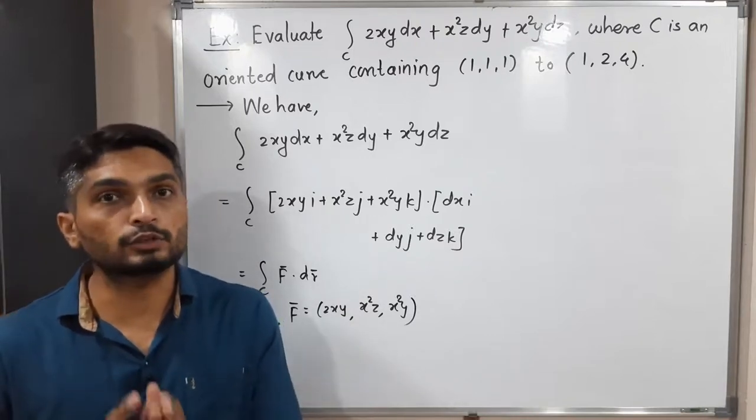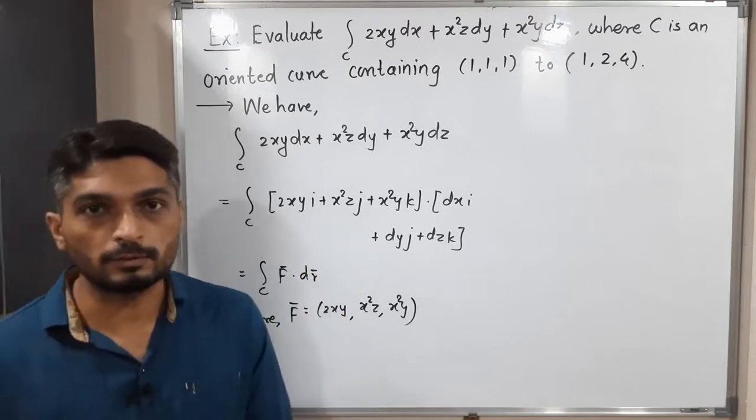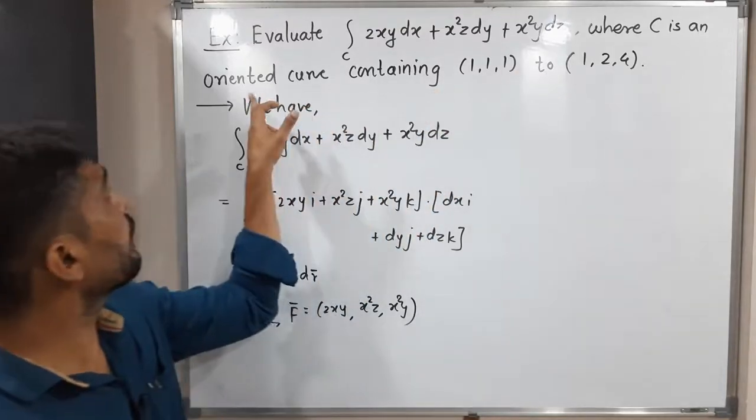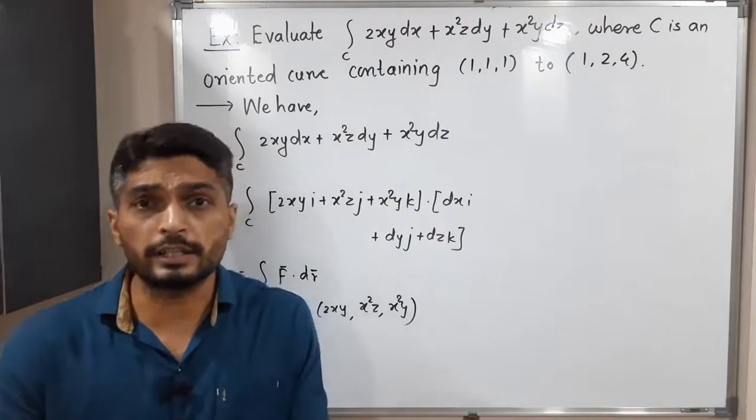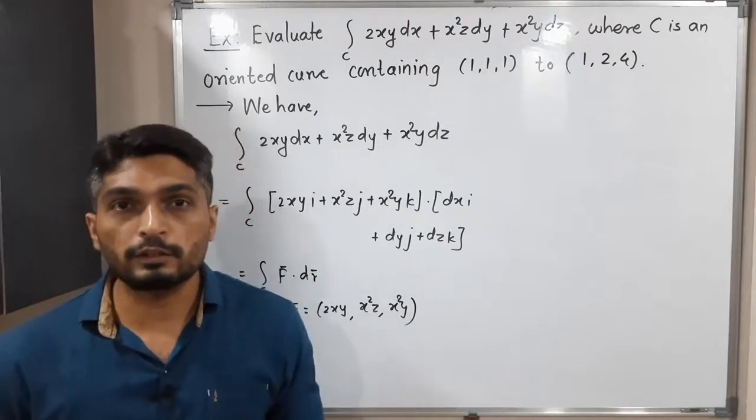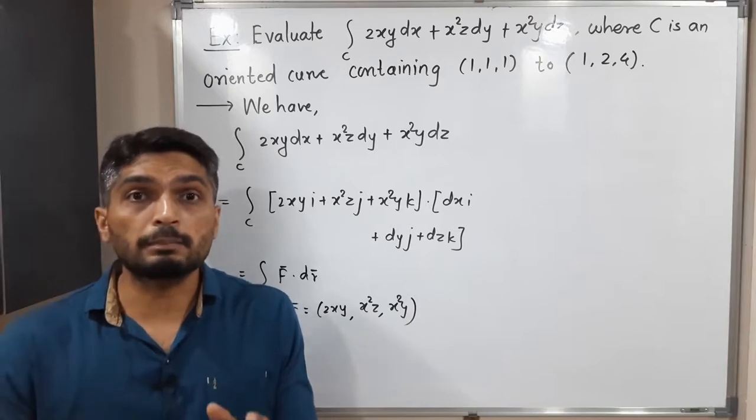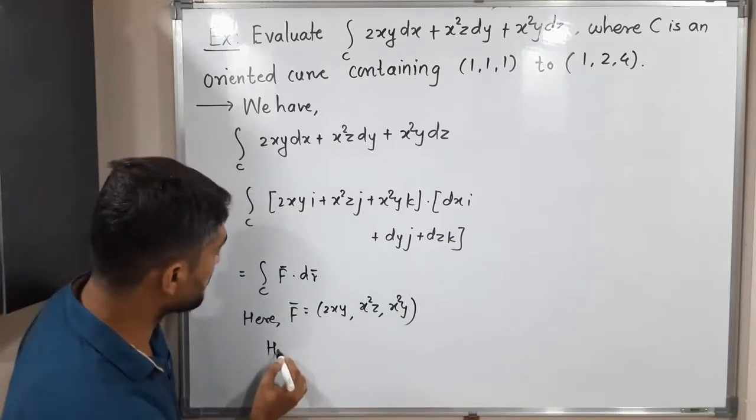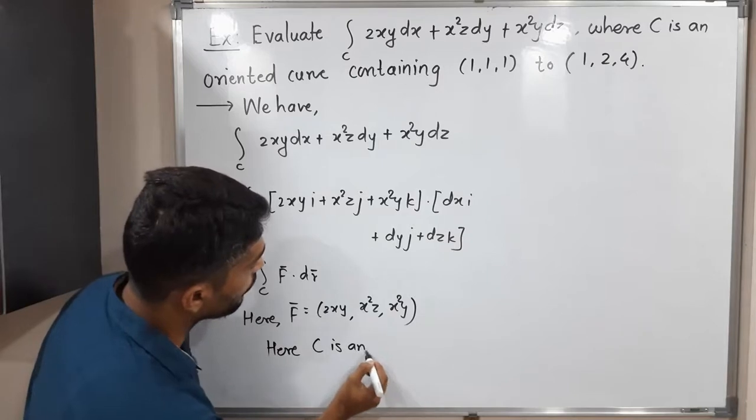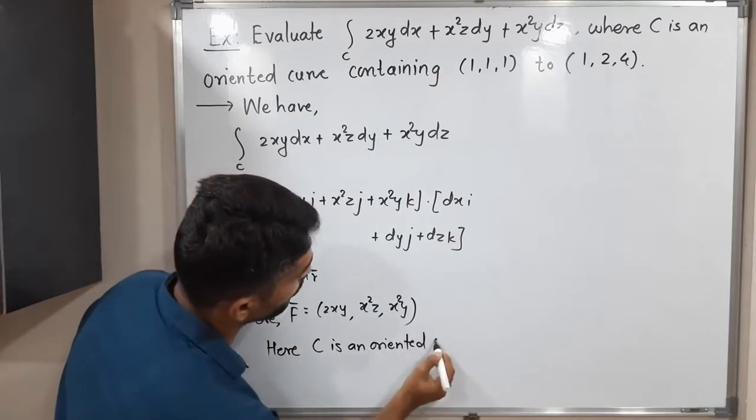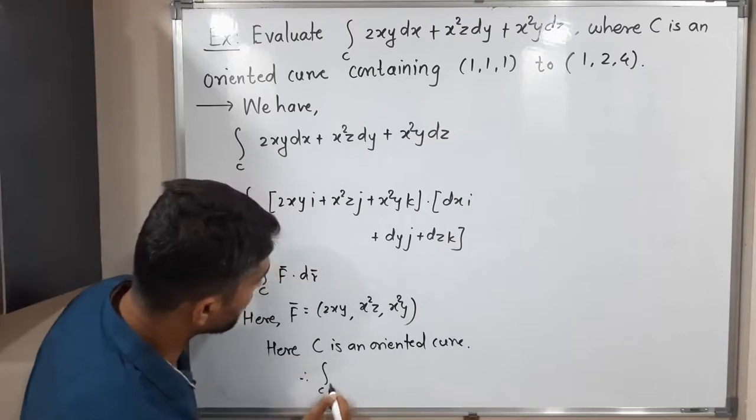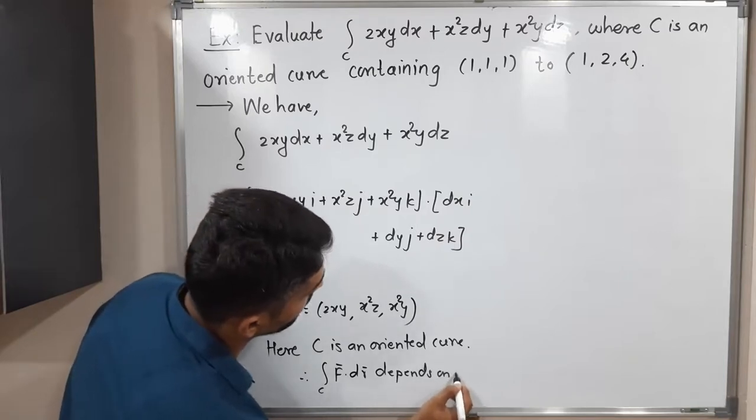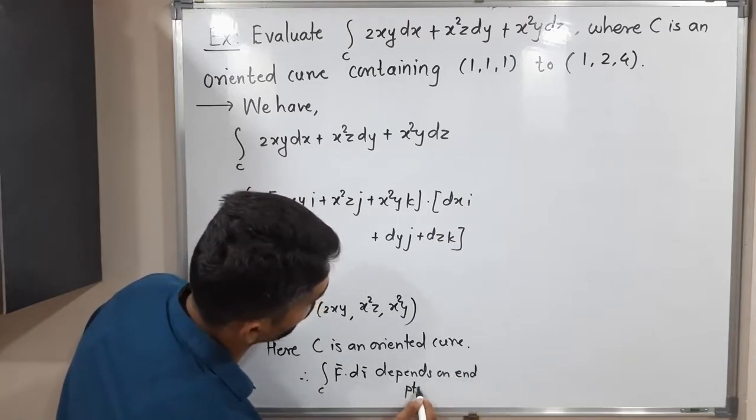After that we will try to find parameterization of the given curve. So tell me what is the given curve? Did you notice they have not given the curve? So they have not given curve. C is any oriented curve. They have simply mentioned it is any oriented curve. So but they have given very important information here. C is an oriented curve. That means the value of integral depends on end points only. Let me mention all these things here. Here C is an oriented curve. So therefore integration over C, F bar dot dr bar depends on end points of C only.